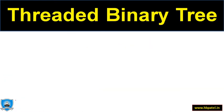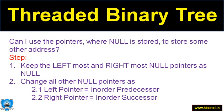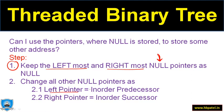That idea is the threaded binary tree. There are basically two steps. Step one: keep the leftmost and rightmost node of any tree as null initially. For all other nodes, if it is the left pointer it should be replaced by the in-order predecessor, and if it is the right pointer it should be replaced by the in-order successor.